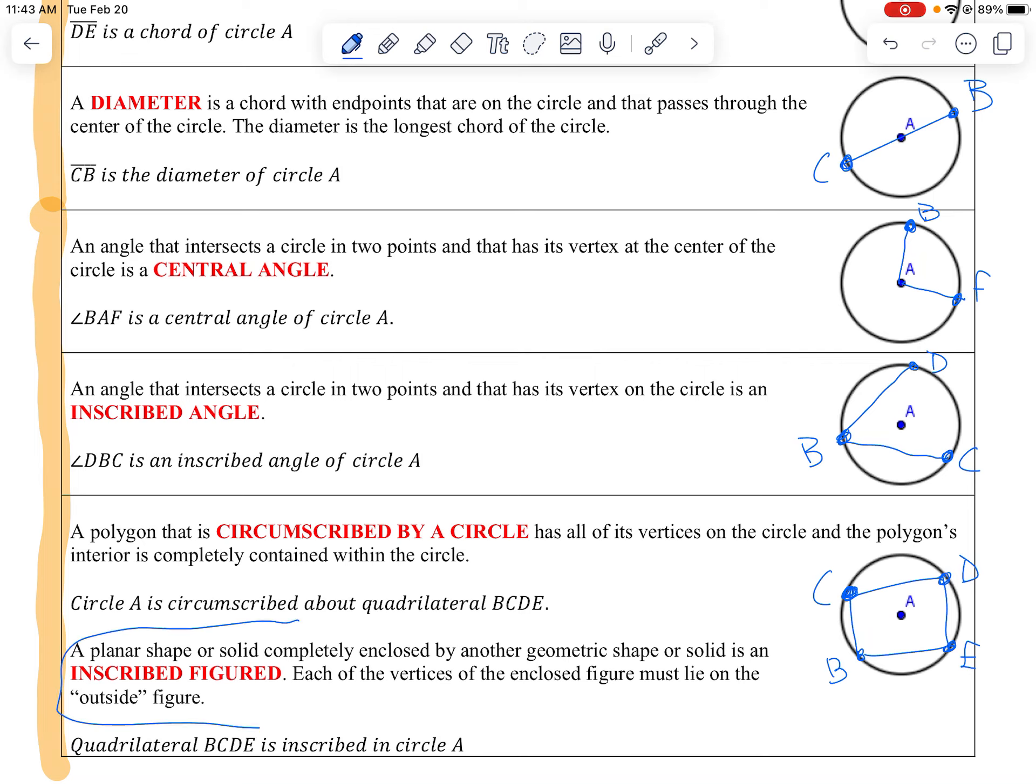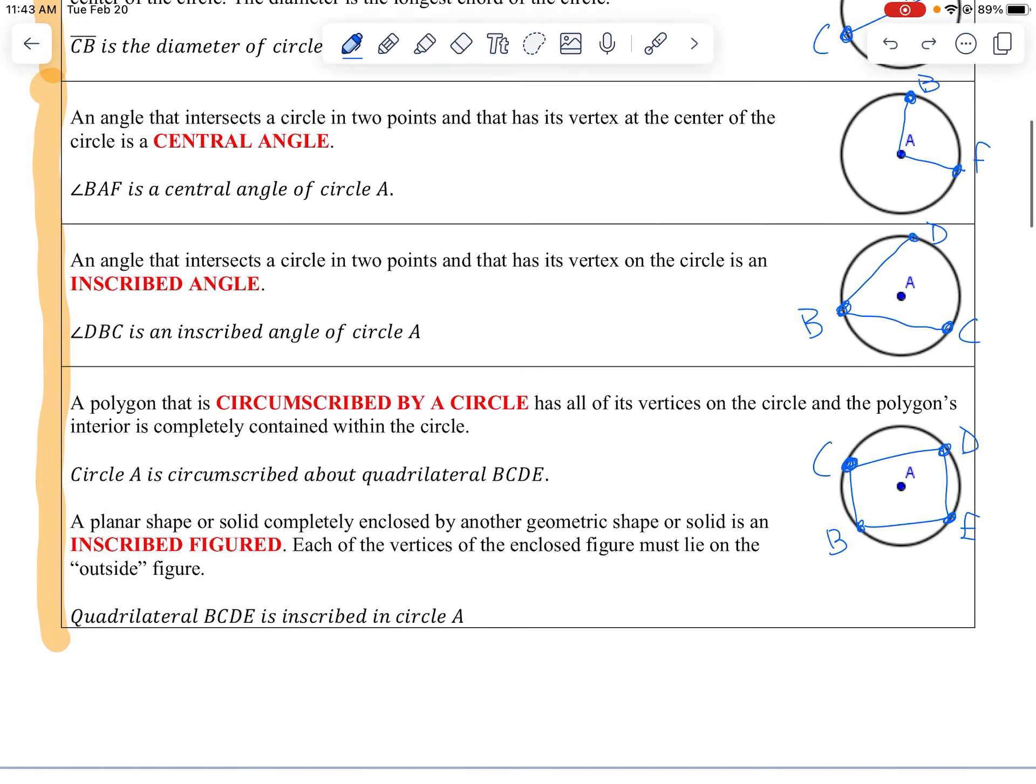And that's very similar to this definition of what an inscribed figure is. An inscribed figure is a figure that's completely contained inside the circle and all the vertices are on it. So there's some slight difference between the two. I'm usually going to call these just inscribed shapes because that's similar to inscribed angles. But yeah, there's a little bit different definition between the two things.